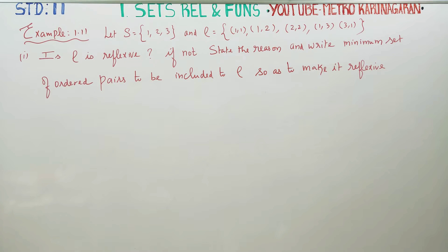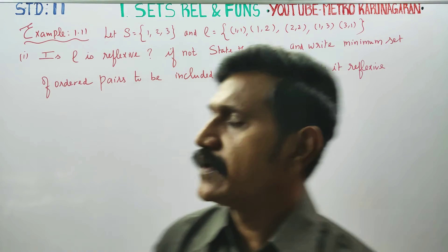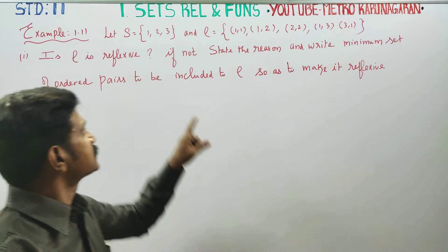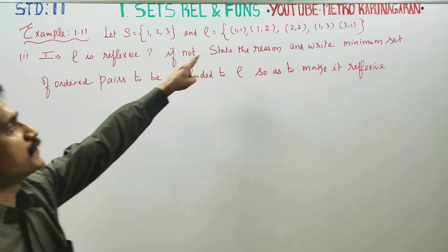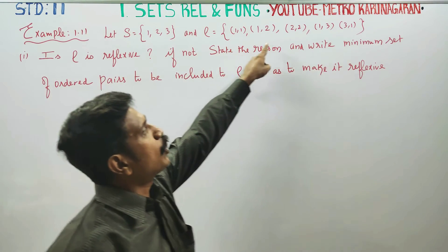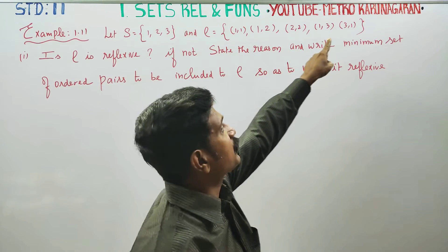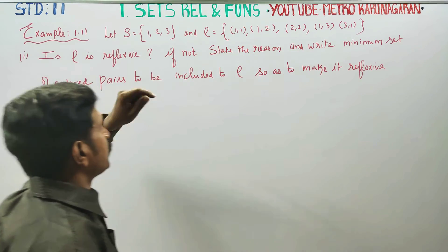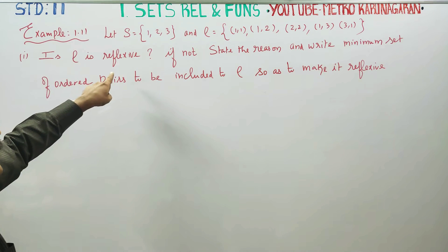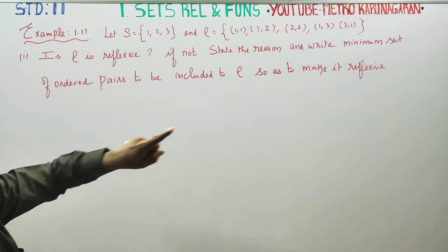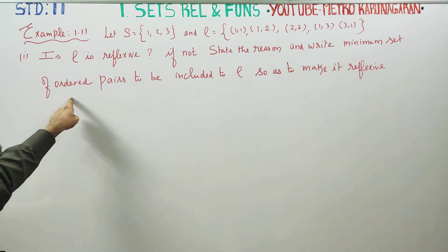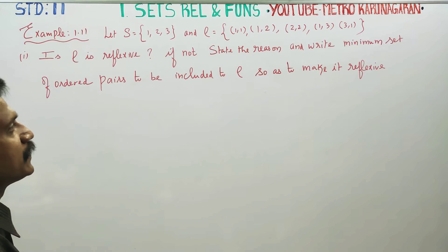Dear Learn Standard students, in example 1.11, is the relation Rho reflexive? In the ordered pairs, reflexive ones are present. If not, state the reason and write the minimum set of ordered pairs to be included.